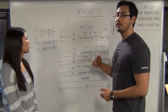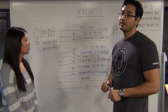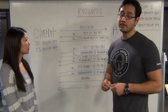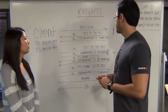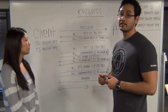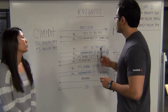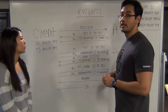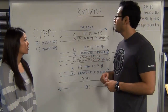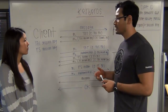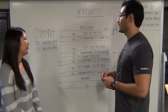Message one is the ticket granting ticket, which contains the client ID, the network address, the ticket validity period, as well as the TGS session key. This is encrypted with the TGS private key. Message two contains the TGS session key, and this is encrypted with the client's private key.